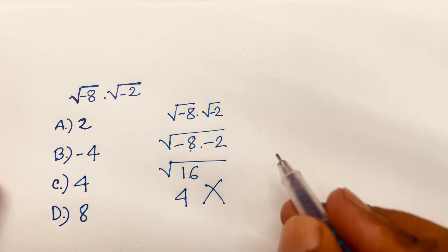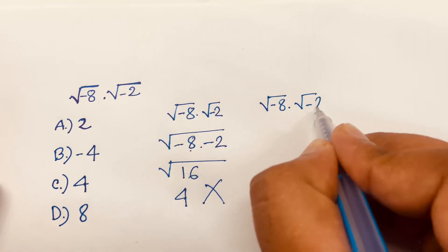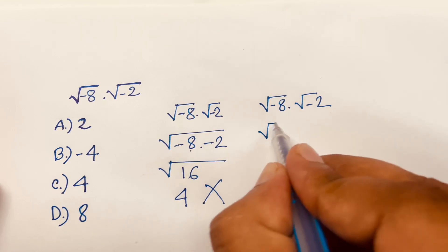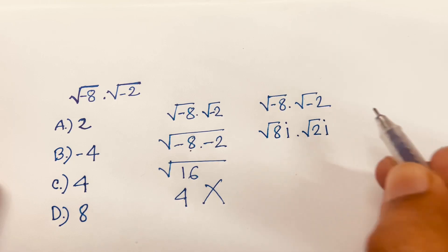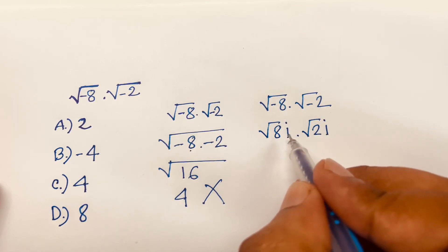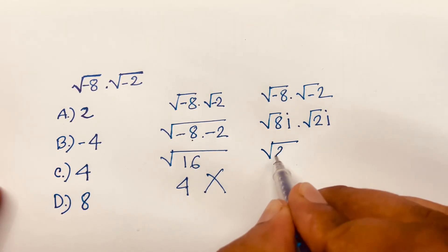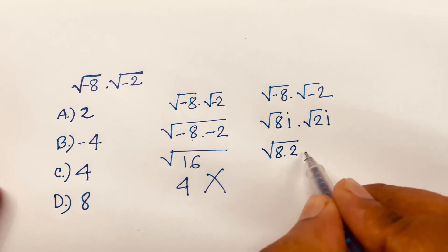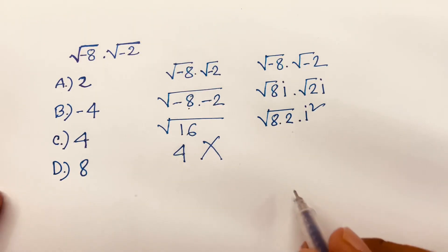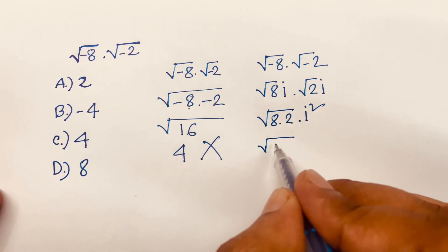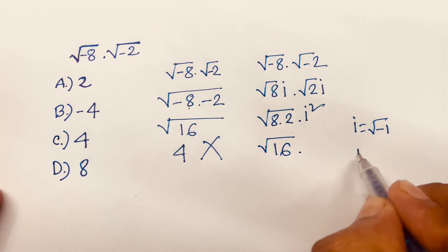So how do we solve this correctly? Square root of minus 8 times square root of minus 2 should be written as square root of 8 times i, multiplied by square root of 2 times i, because square root of minus 1 equals i. Then we get square root of 8 times 2, multiplied by i times i, which is i squared.